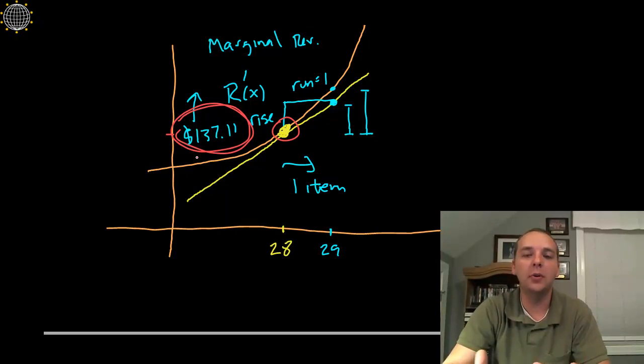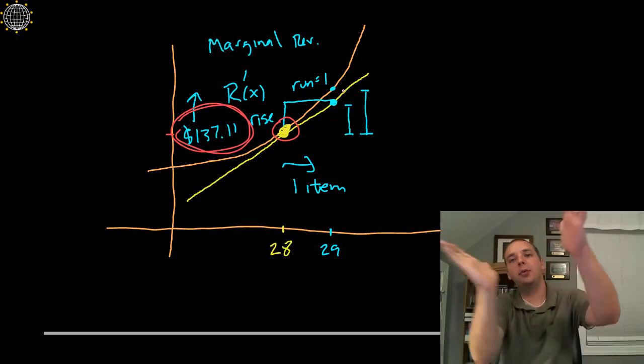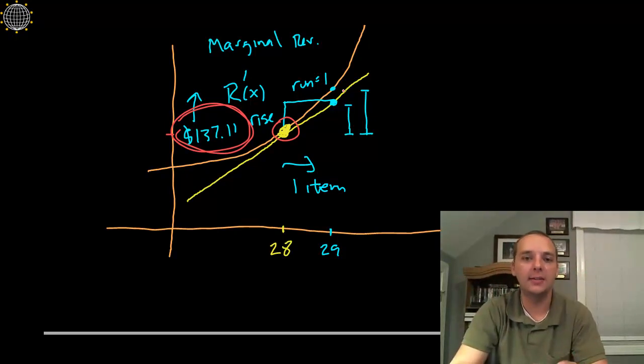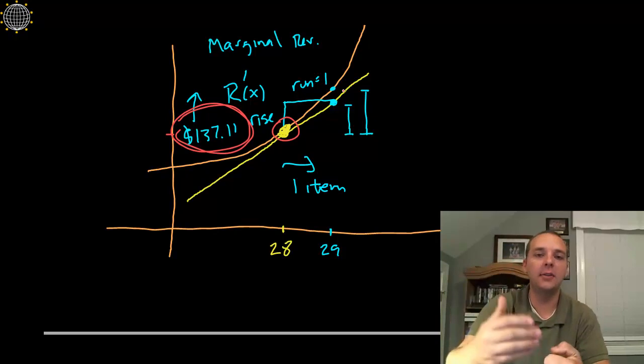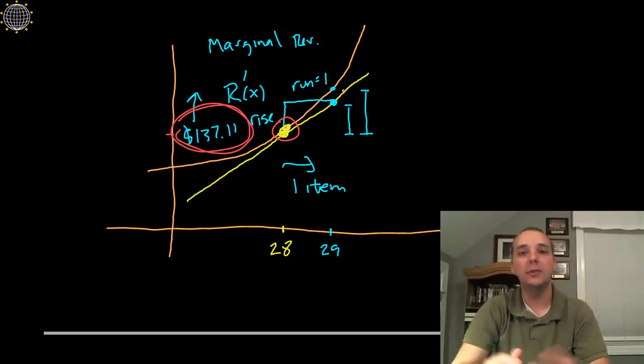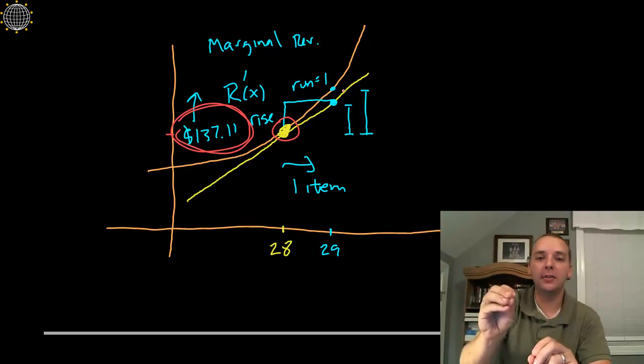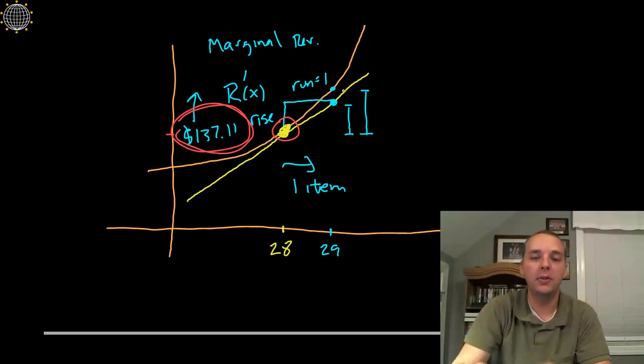Now would this approximation work if you were trying to approximate selling 57 items? No, probably not. Because look at the picture here, do you see how the graph here starts to separate? So as long as you stay local around 28, marginal analysis is fantastic. You just add $137.11 and you get the extra revenue. Or if you subtract $137.11 you get the less revenue for selling maybe like 27 items. If you want to approximate the revenue for 30 items, add, don't just add $137.11. Do that twice, right? Add $137.11 and then another $137.11.